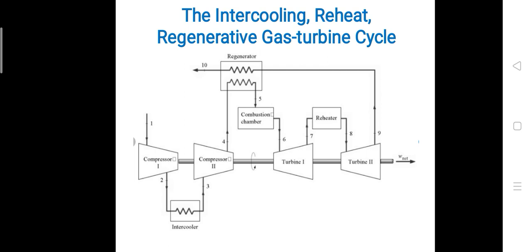From the output of turbine 1, the gas goes to the reheater. The reheater is similar to the combustion chamber. The burnt gases coming from the HPT have lost some temperature after expansion. In the reheater, heat is added again to the gases.